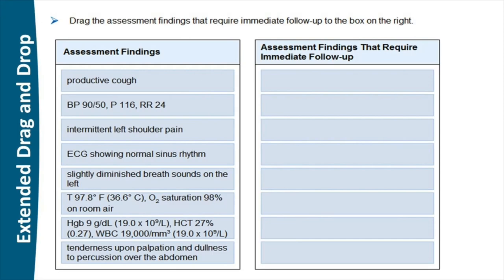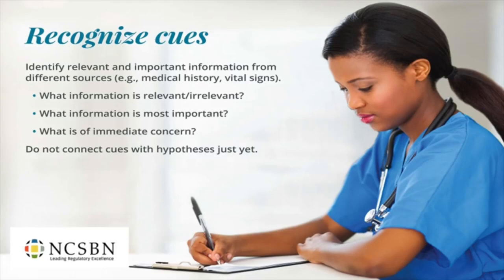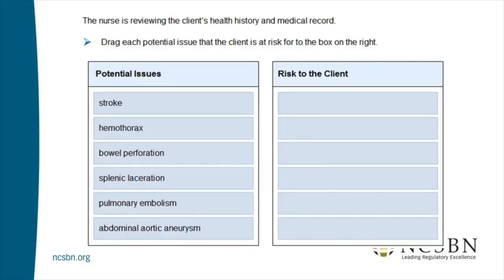In terms of the clinical judgment measurement model, the first box at layer three is called 'recognize cues.' It's about: here is a lot of information, including some you probably don't need — can you distinguish relevant from irrelevant, now from later, critical from good-to-know-but-not-critical? We didn't ask what the findings mean or why they're important, because that's the second box, not the first. The first is about recognizing and identifying cues. The second item moves into interpreting and analyzing.